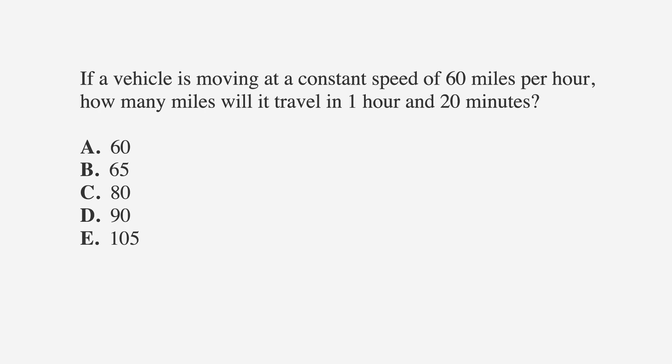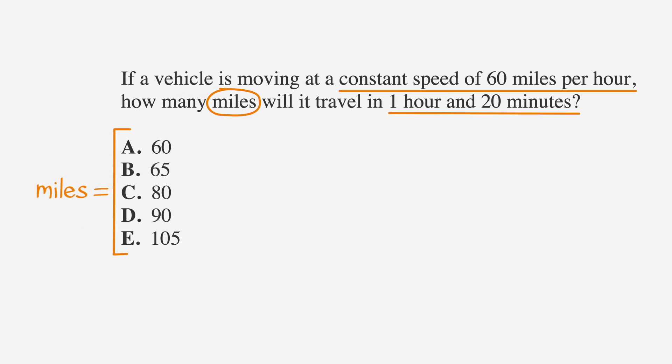Now, let's apply what we know to a word problem where we have to set up a ratio equation and remember to incorporate units of measurement. If a vehicle is moving at a constant speed of 60 miles per hour, how many miles will it travel in 1 hour and 20 minutes? Let's underline the facts: constant speed of 60 miles per hour and 1 hour and 20 minutes. Circle the keyword, which is miles. Label the answer choices miles to keep in mind that's what we're looking for.